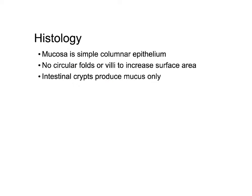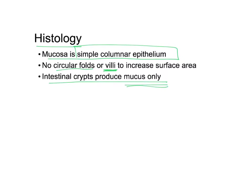The histology of the large intestine is much simpler. The mucosa is simple columnar epithelium — there are no circular folds or villi to increase surface area, but there are intestinal crypts that only produce mucus. The mucus acts as a lubricant to reduce friction.